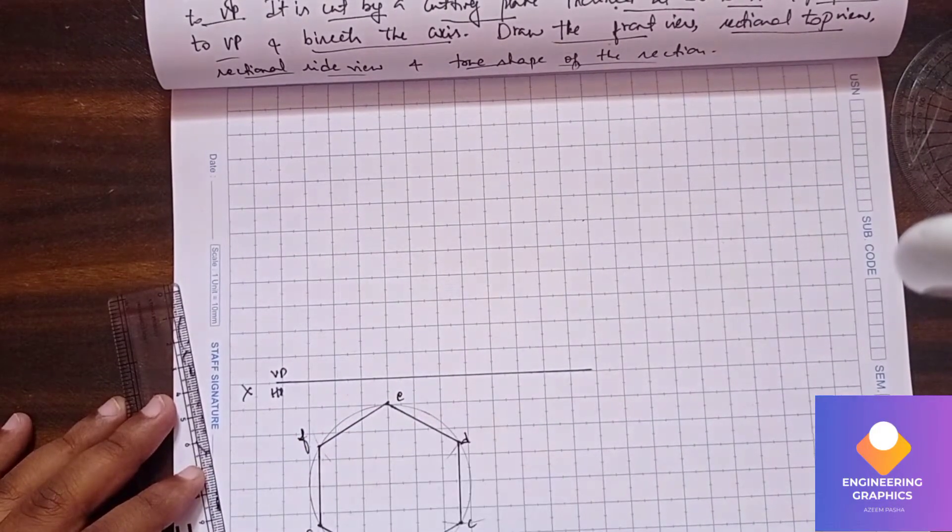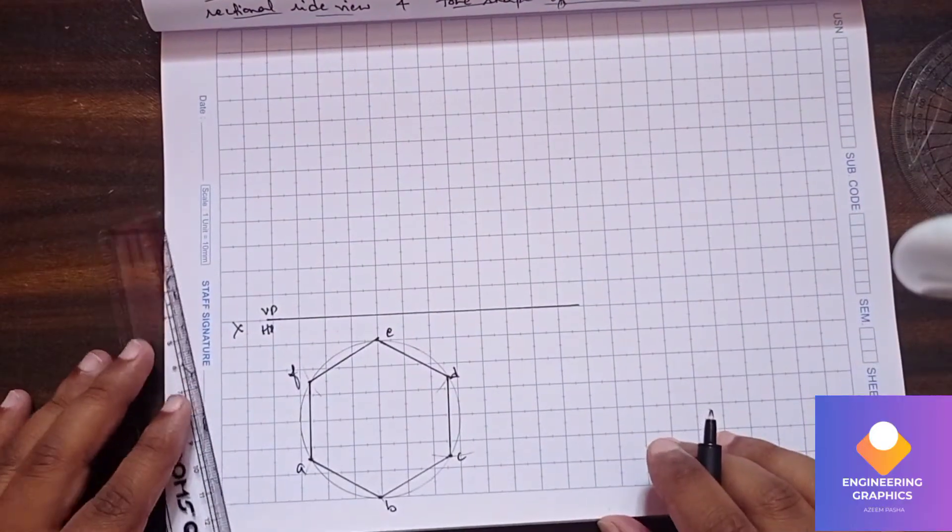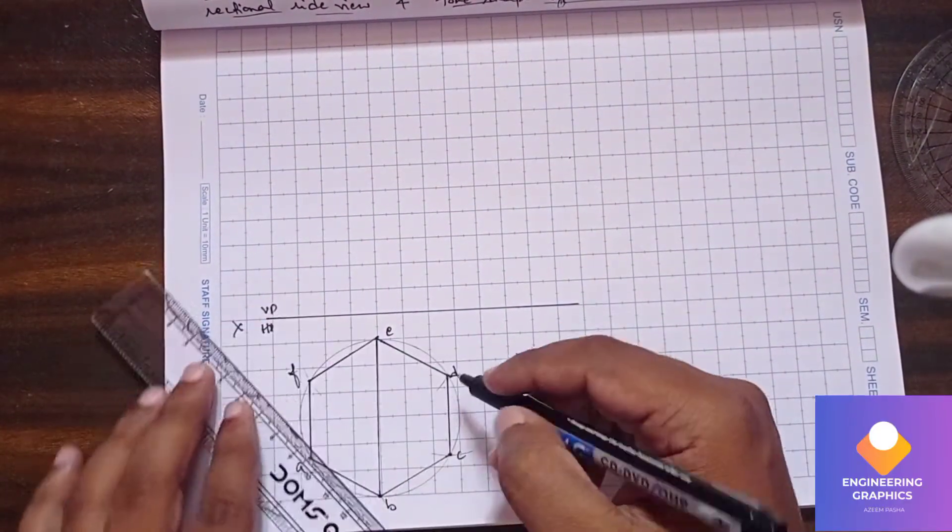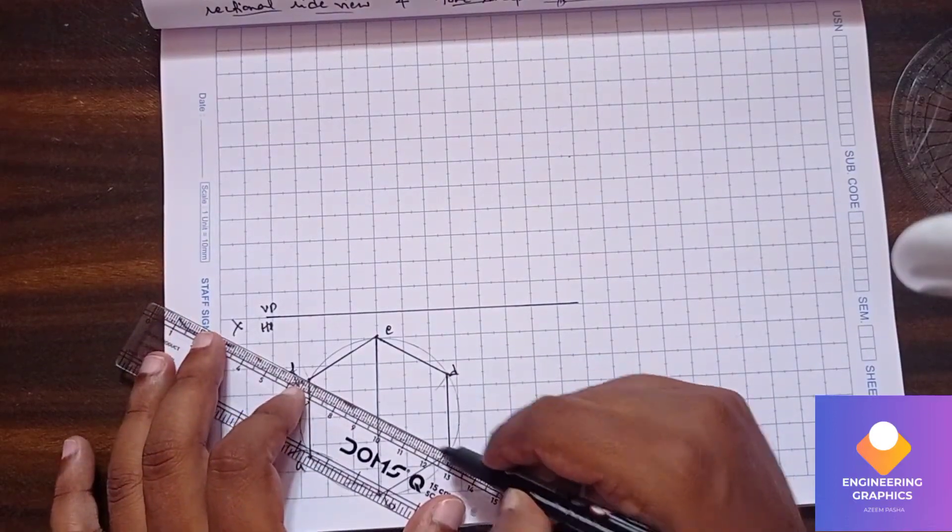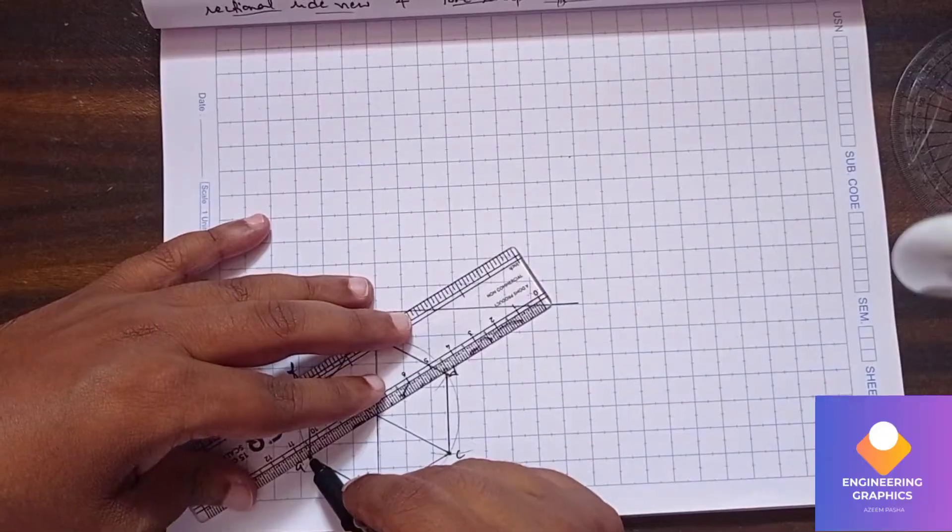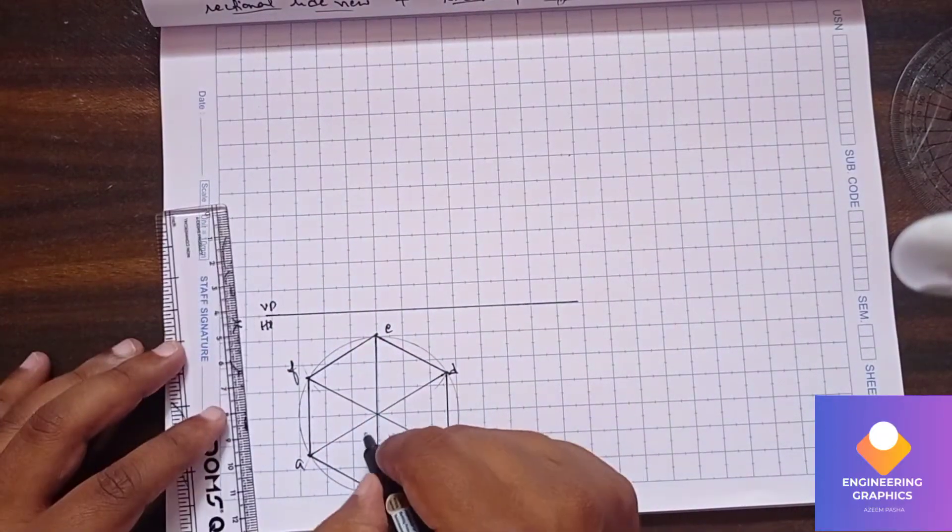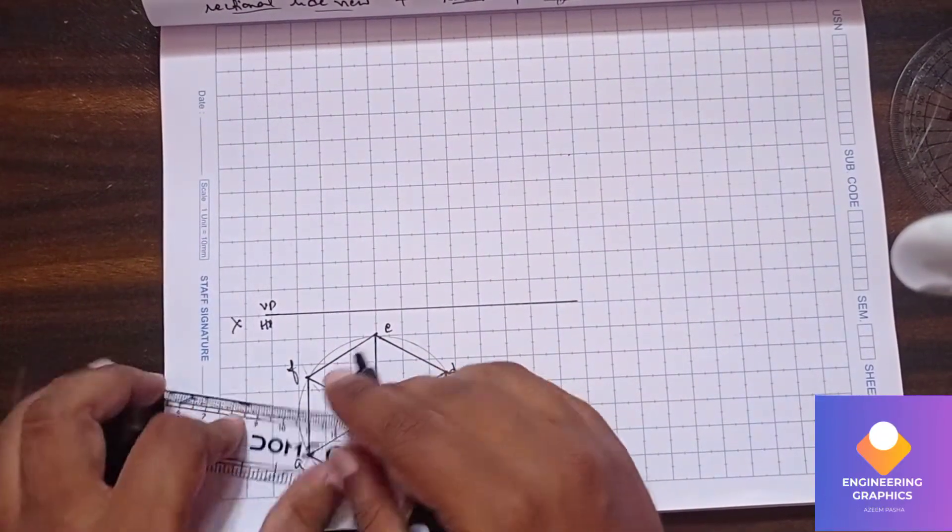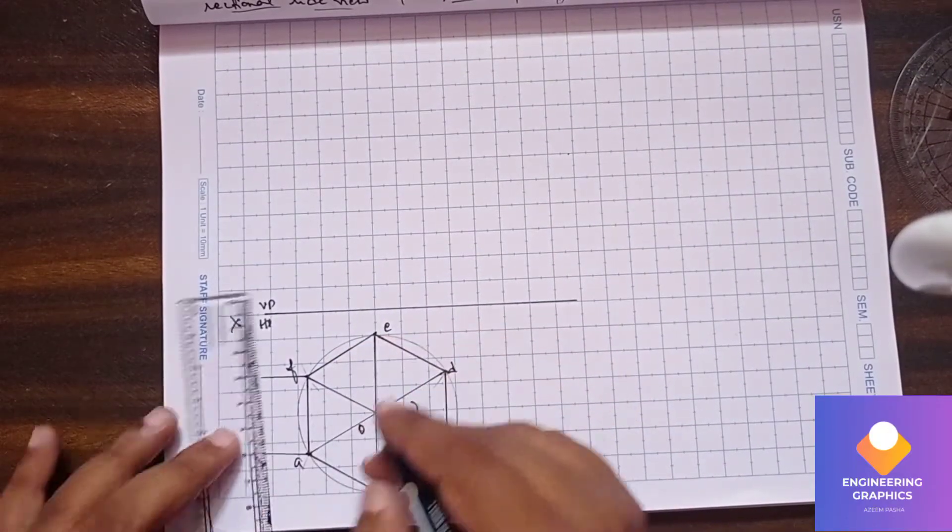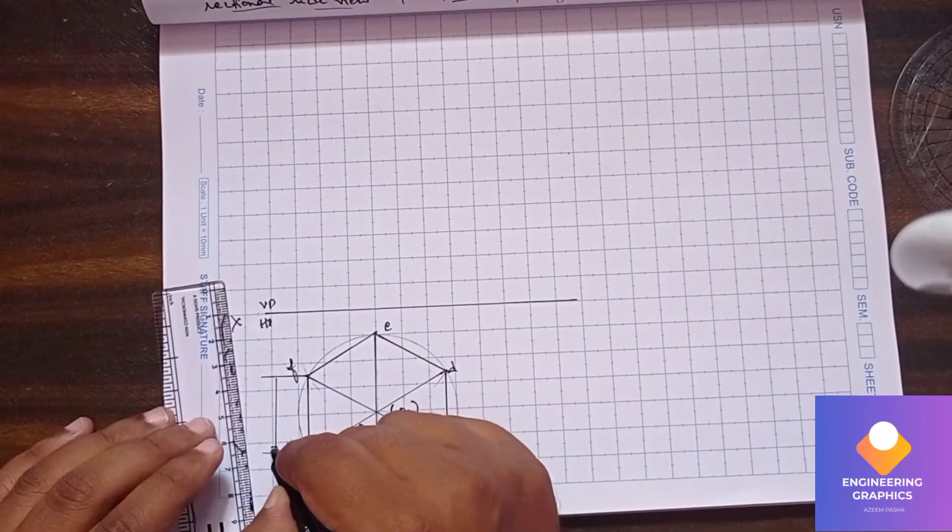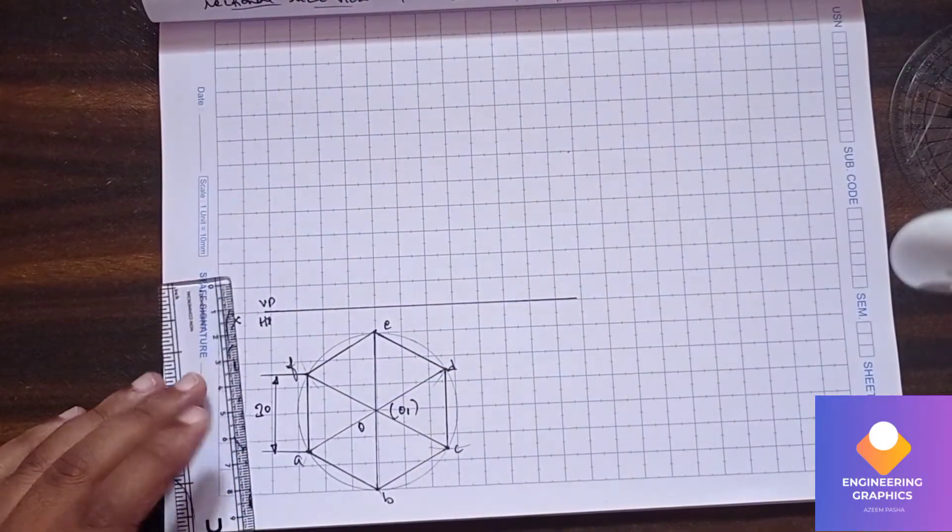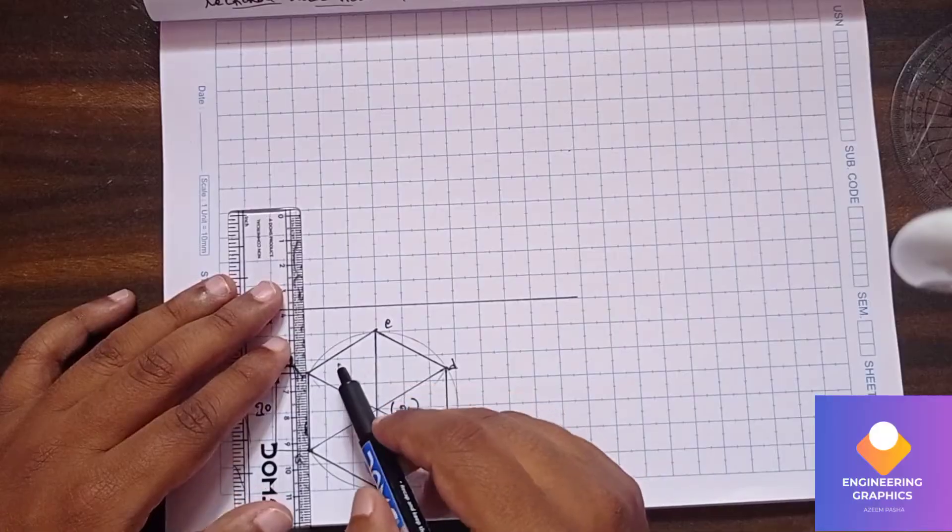Now we draw the slant edges. Since it is a pyramid, we should draw the inclined edges. The dimension is 30mm, so now we draw the front view.